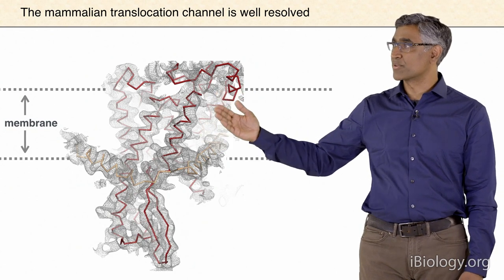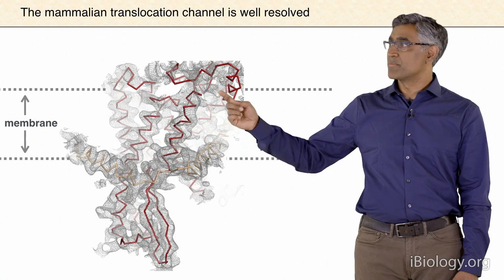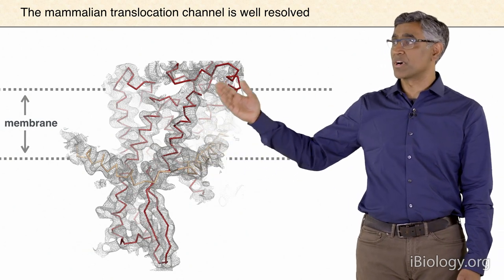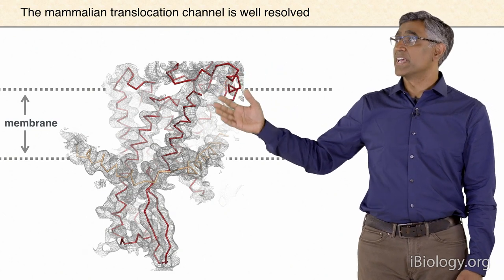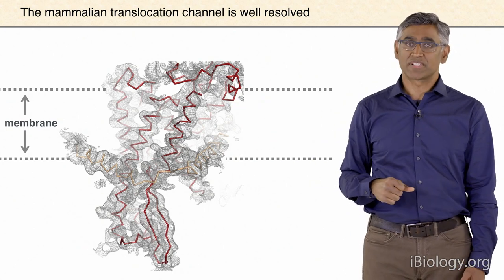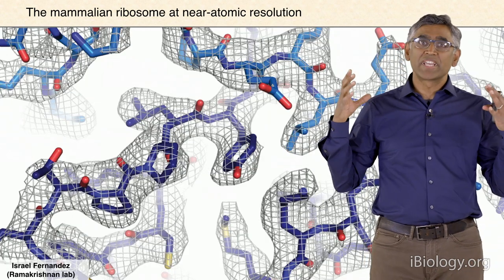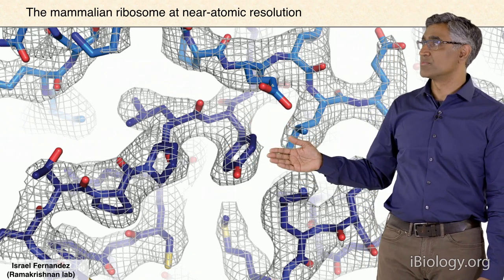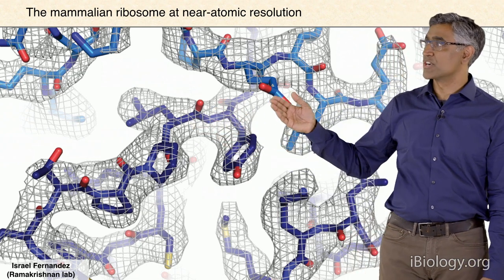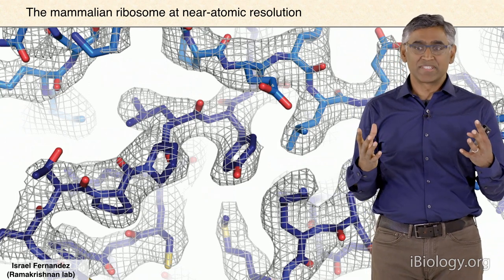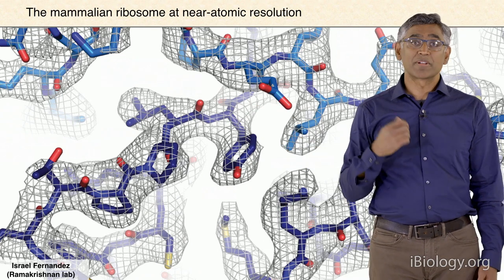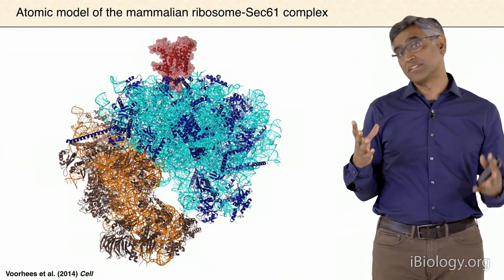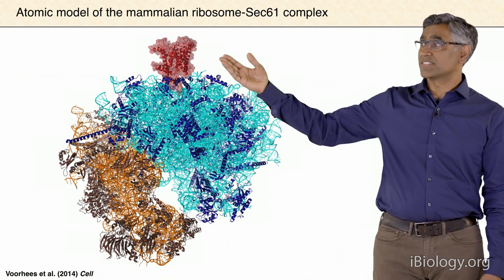Focusing now on the SEC61 complex, individual helices of SEC61 are visible; you can even see the pitch of the helices. When you sharpen the density maps, one gets even better resolution of the SEC61, and it's quite easy to trace the backbone of the SEC61 complex through this experimental density. Given that there is already known structural information from a homologue of SEC61 from archaea—derived from Tom Rapoport's group by X-ray crystallography—it was possible to construct a model of the mammalian SEC61 complex.